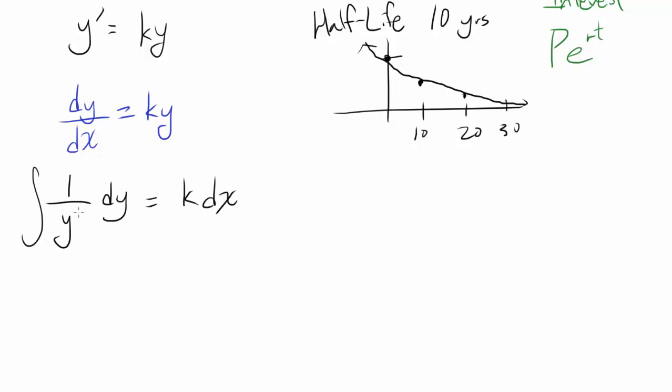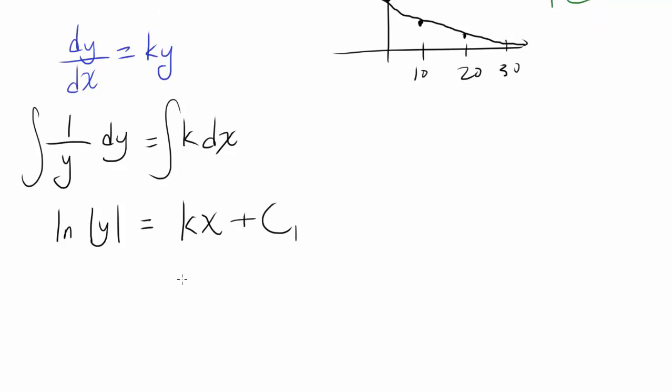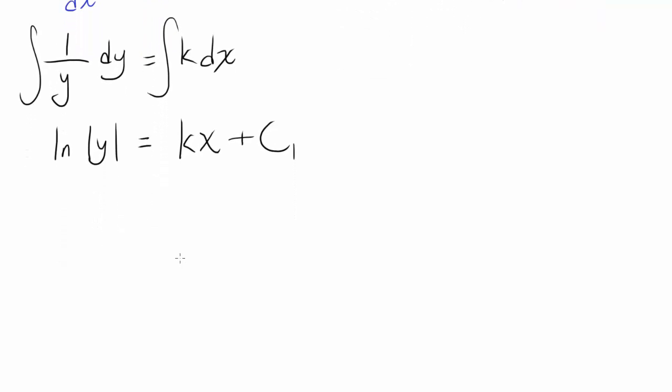Now you integrate. What's the integral of (1/y)dy? That's ln|y|. What's the integral of k dx? That's kx + C. Obviously you have another constant associated with ln|y|, but when you have two constants, that's the same thing as one constant. So you only have to write the constant once, and I'm going to write it on this side. Let's call it C₁ for the sake of simplicity.